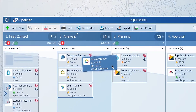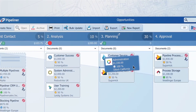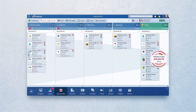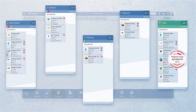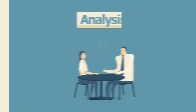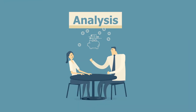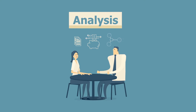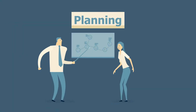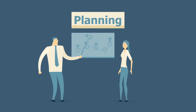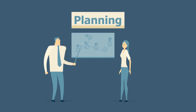Having a defined visual process through which you move your opportunities is a must. It can be separated into various stages like first contact, where you get to know each other; analysis, figuring out clients' budget, expenses, and products that the client currently has, or their needs; and planning, where based on info gathered, you prepare solutions and a list of products that fit each client.